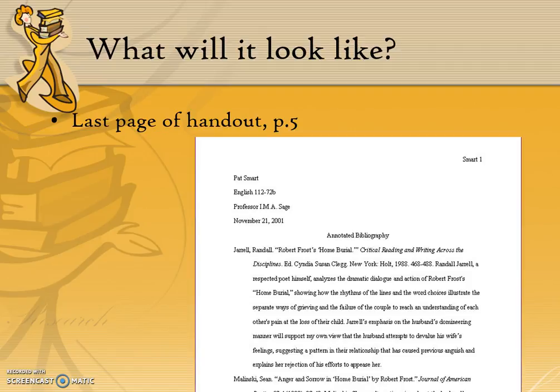What will your finished annotated bibliography look like? You will set up your paper just like you would for any MLA formatted assignment. Your name, class name and section, professor's name, and date will be in the upper left-hand corner. There is a running header in the upper right-hand corner that includes your last name and the page number.